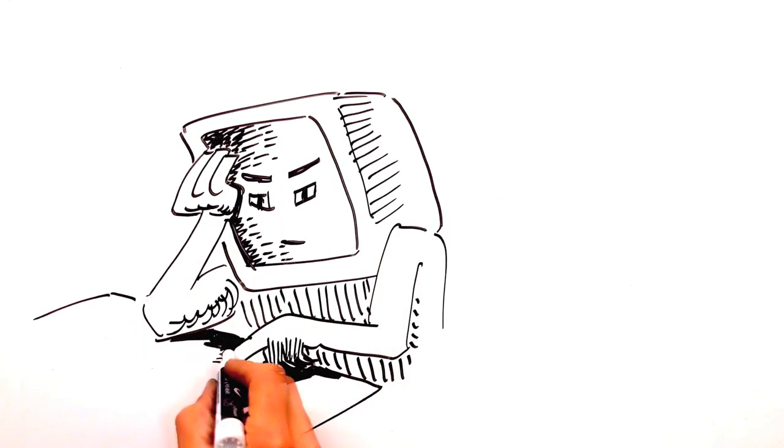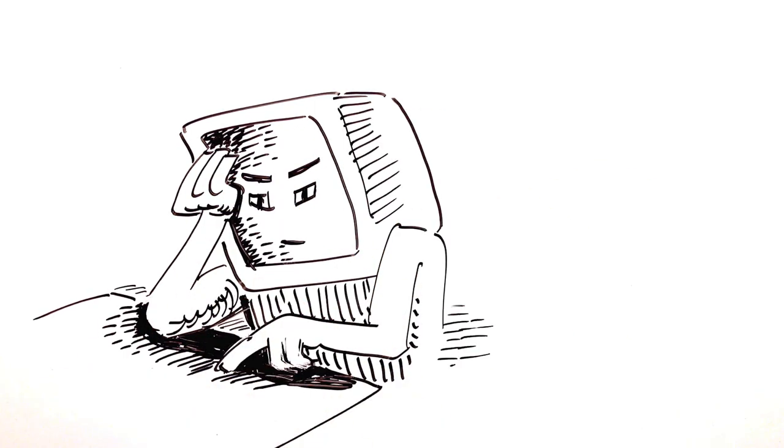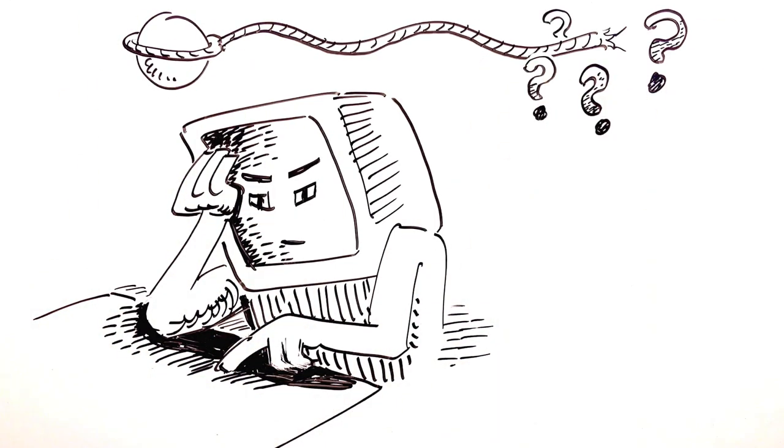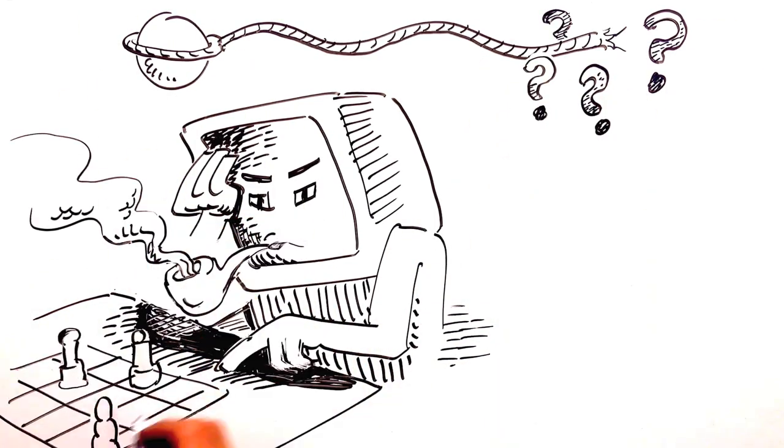As it turns out, computers kind of suck at something we're really good at, called inference, which is why a machine still cannot grasp why a rope can be used to pull something but not push it, why a computer can beat chess champions but should not be allowed to babysit your kid.